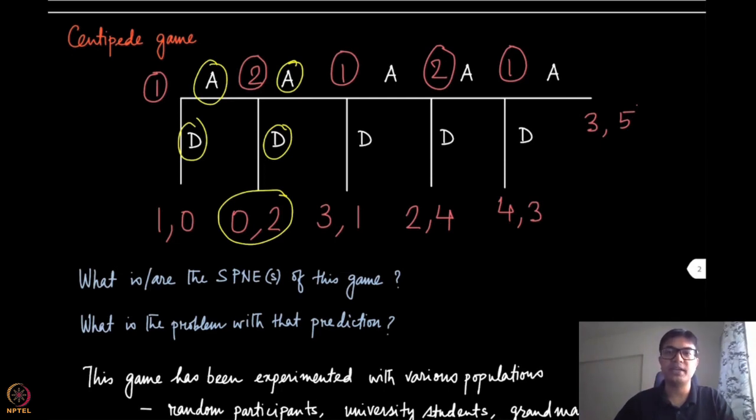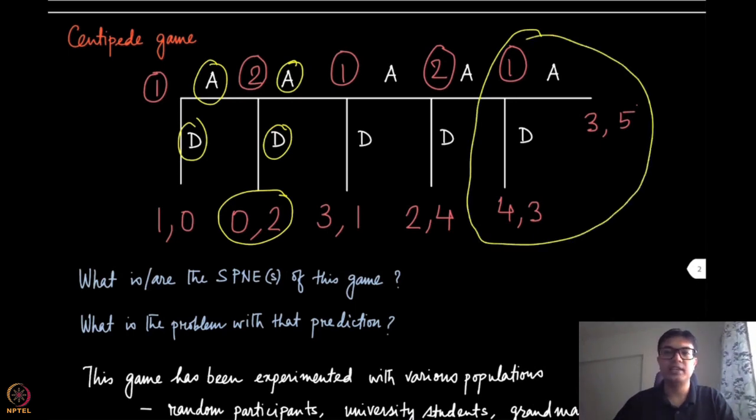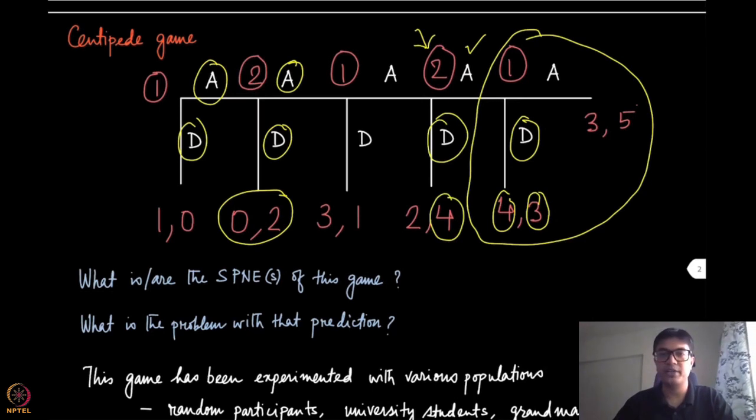Now what is the subgame perfect Nash equilibrium of this game? If you look at, if you use the backward induction, then at this node you will apply, try to find out the Nash equilibrium, pure strategy Nash equilibrium for player one. You can see that this number is larger, so therefore playing D is a better response. So if you go back now one step and ask what player two should play, it knows if it plays A, one will play D and it will get a utility of three, while if it plays D then it gets a utility of four. So therefore playing D is also a better option for player two. And you can continue this and you will see that for all the players, playing down is the best response. So therefore the subgame perfect Nash equilibrium is the case where all the players are playing D.